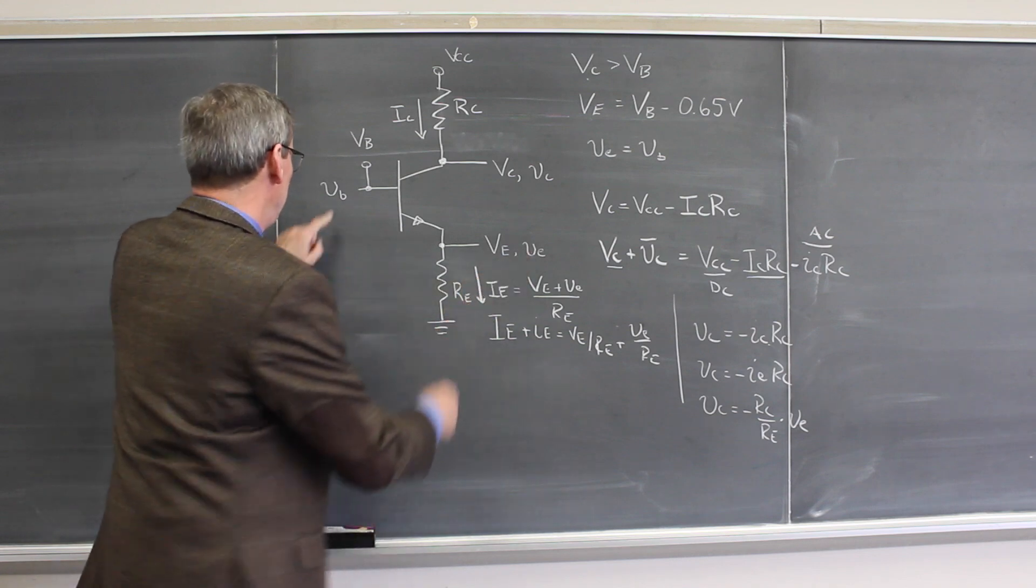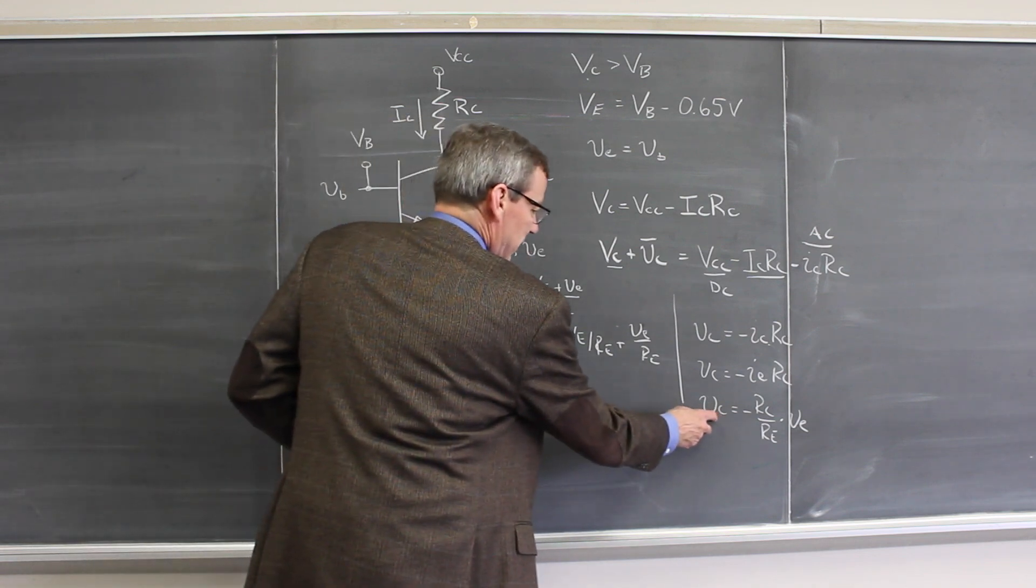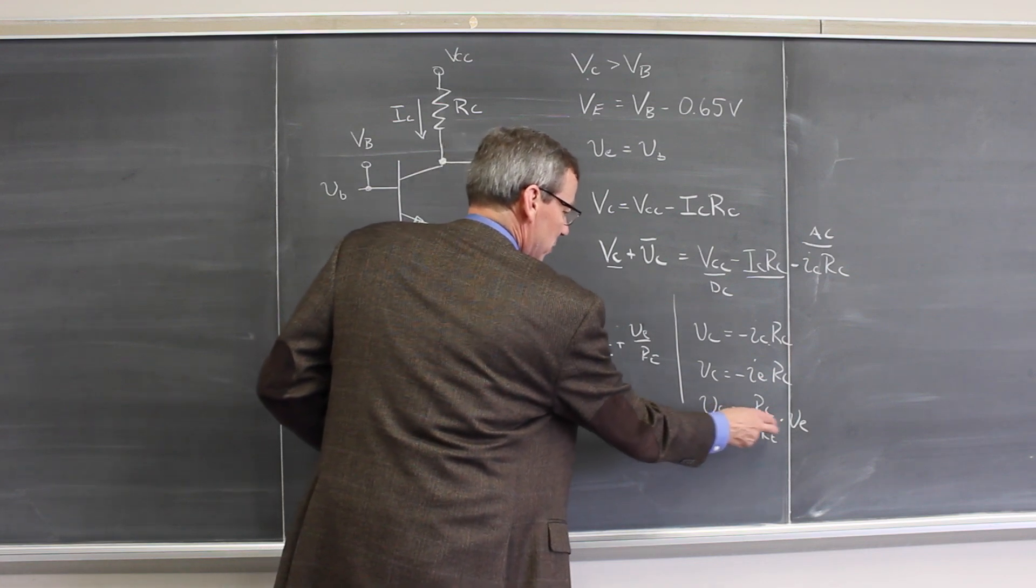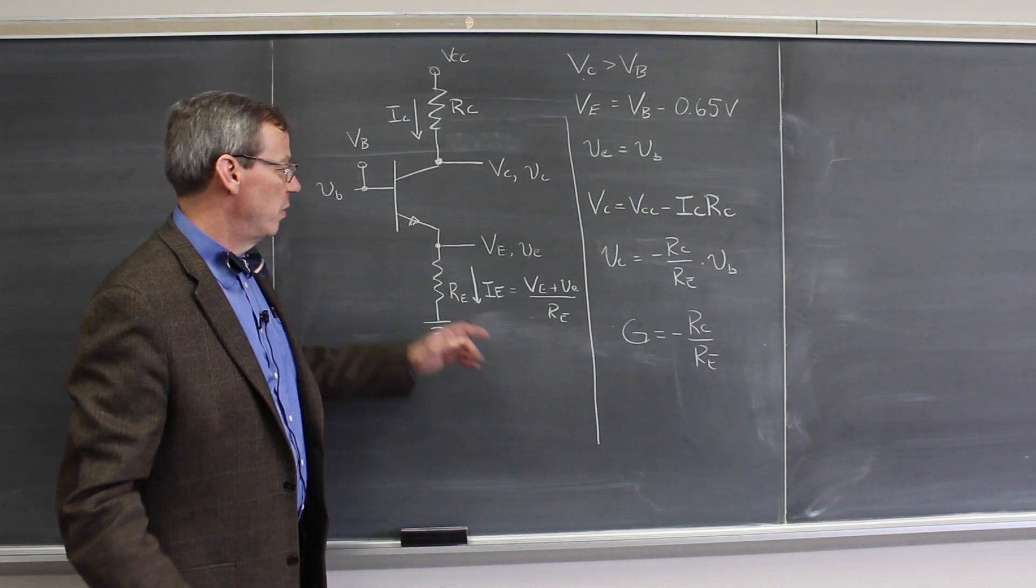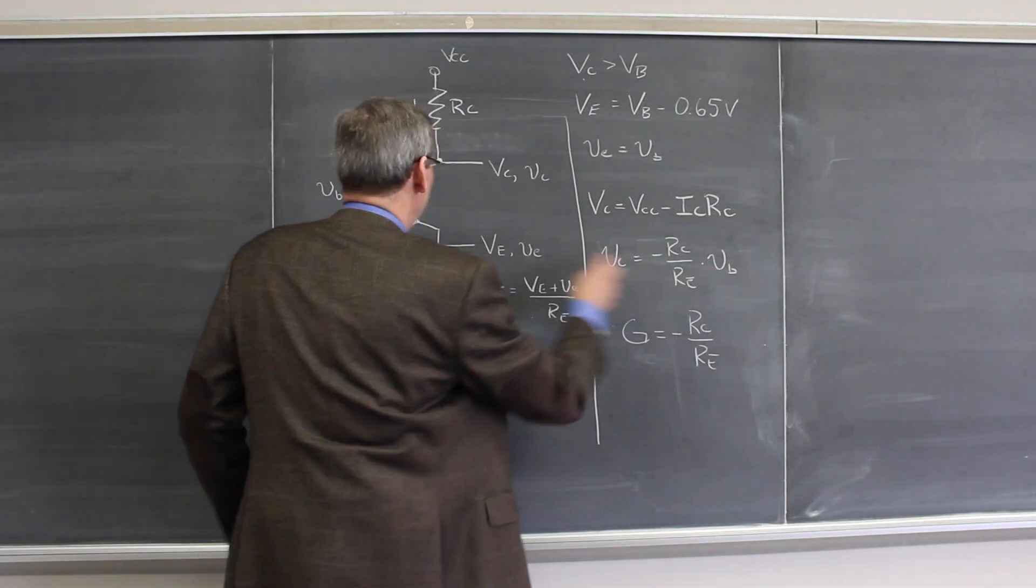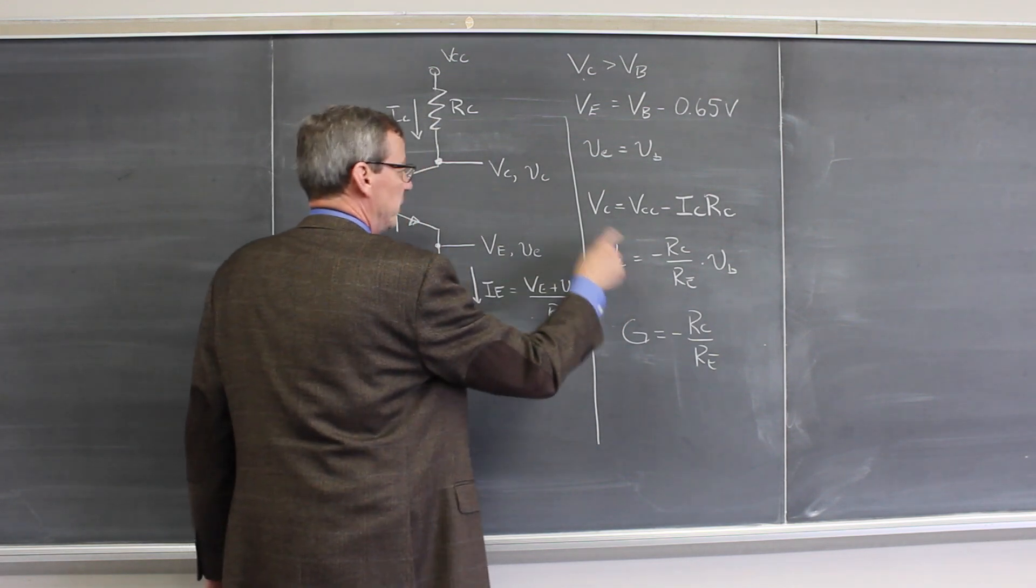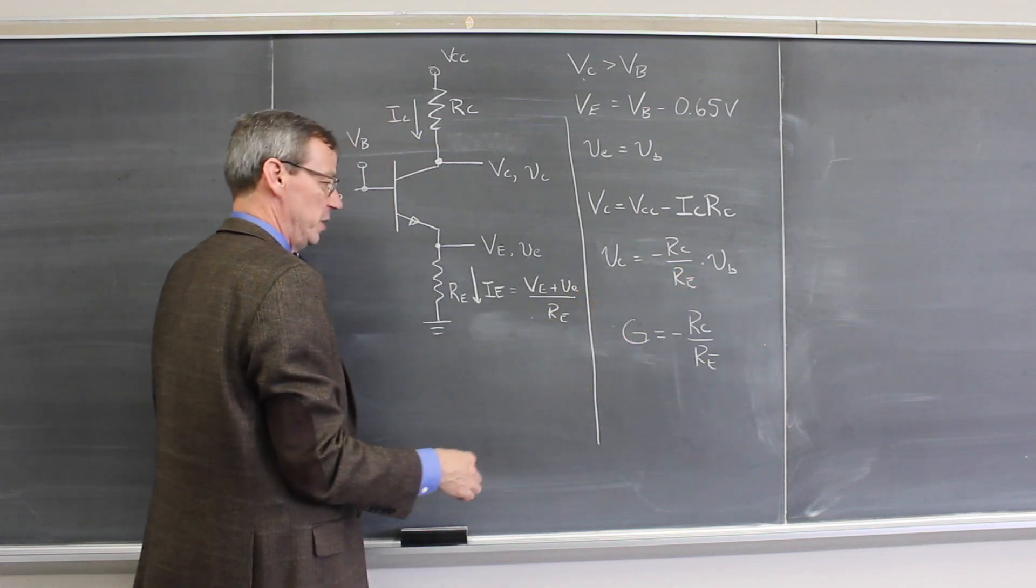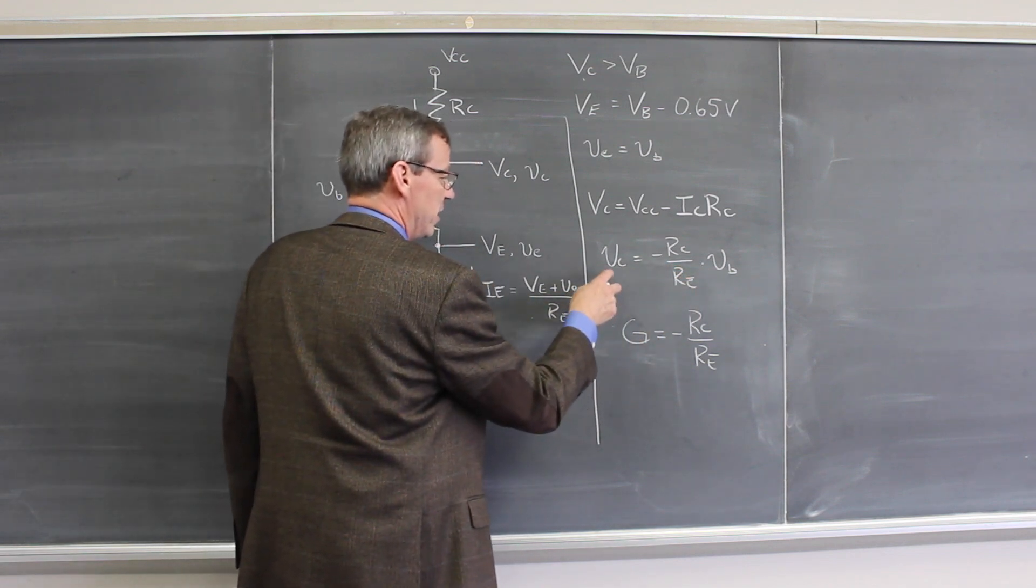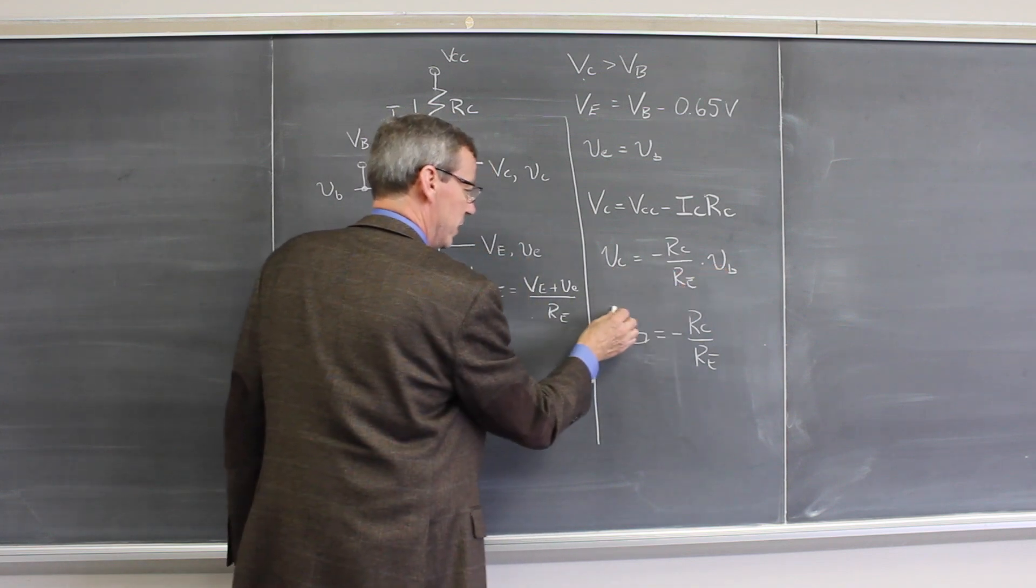But the emitter voltage is still just a copy of the base voltage. So what we're going to get is that the collector voltage is the ratio of these resistors times the base voltage. So if we replace the emitter voltage with the base voltage, which is just a copy, then we get this relationship here that the collector voltage AC part is the ratio of RC to RE times the input voltage. And that just says the gain is the ratio of the output to the input or minus RC over RE.